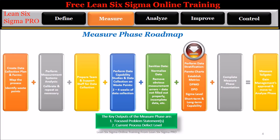Step 6: Perform data stratification — use Pareto charts for attribute data, process capability analysis, box plots, histograms, etc. After completing the data stratification, establish Six Sigma metrics: DPMO, DPO, sigma level, and short-term and long-term process capability.